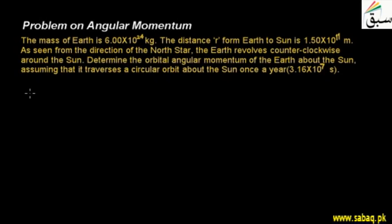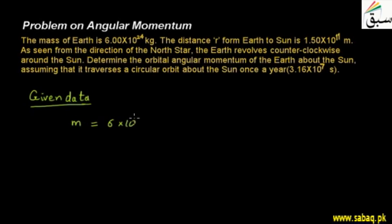First, we write down the given data. Earth's mass, which we represent here, is 6×10²⁴ kg.